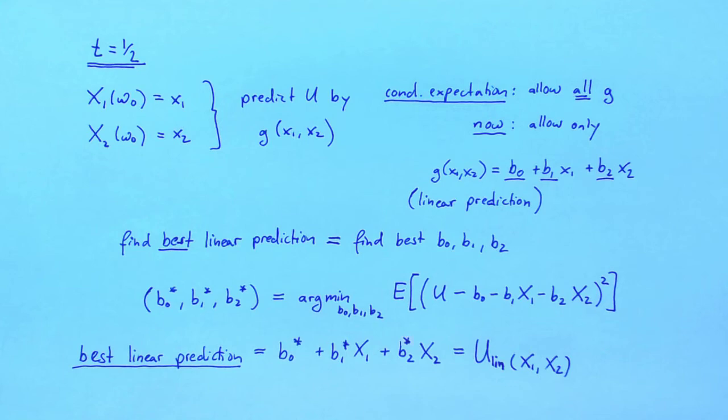First, suppose that we are looking at the best linear prediction of u given a collection of axes, and we find that the parameter b1 star is equal to 0. In other words, the best linear prediction ignores the information provided by x1.